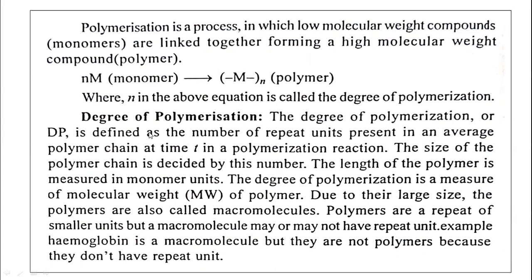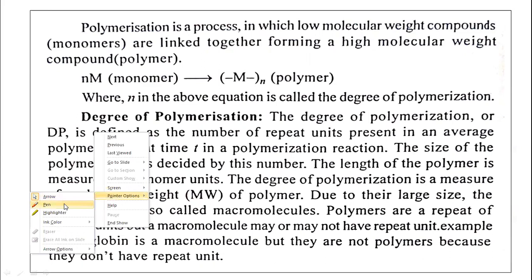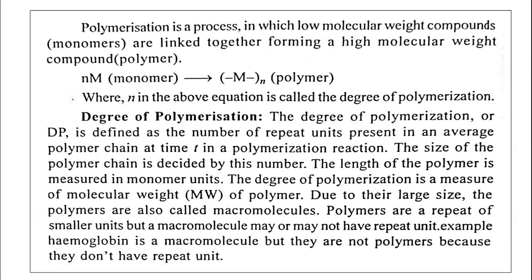What do we mean by degree of polymerization? The degree of polymerization, or DP, is defined as the number of repeat units present in an average polymer chain at time t in a polymerization reaction. For example, if six monomer units are repeated in an average polymer chain, the degree of polymerization is six. The size of the polymer chain is decided by this number.